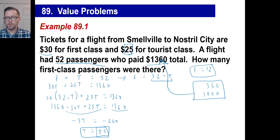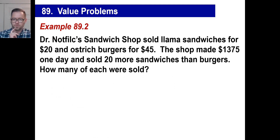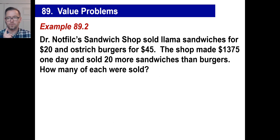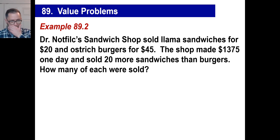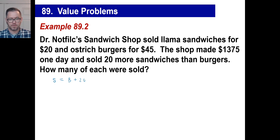Just think of these as coin problems — they all work the same way. If you have two things that are unknown, you approach it exactly the same way as coins. Dr. Knottfeld's sandwich shop sold llama sandwiches for $20 and ostrich burgers for $45. The shop made $1,375 one day, and they sold 20 more sandwiches than burgers. How many of each were sold?